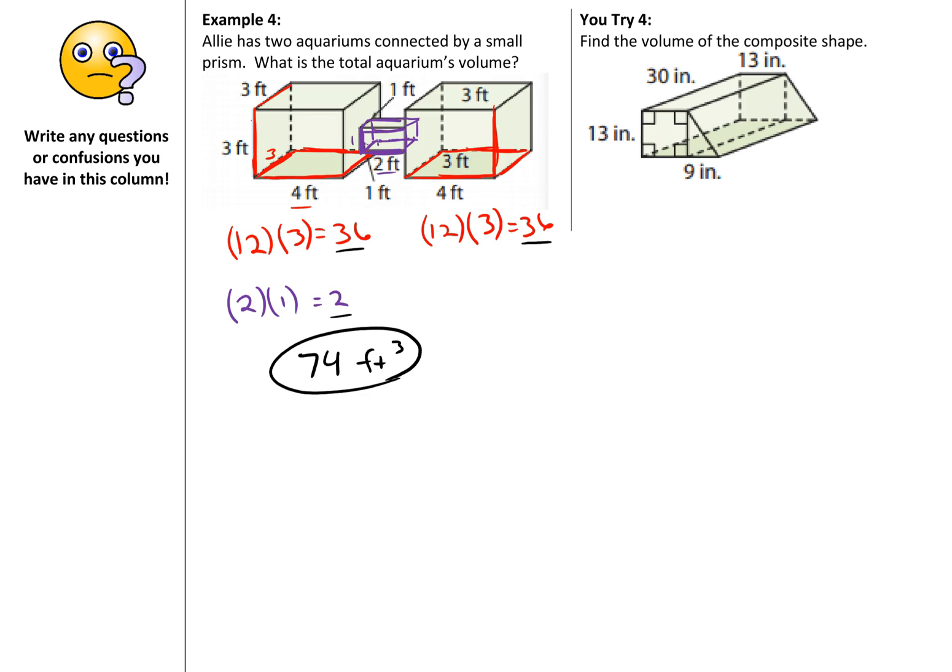I'm going to have you move on to You-try number 4. Now my challenge to you in You-try 4 is to look at this as a trapezoidal prism. It is technically a rectangular prism and a triangular prism together, but why not save some of the work here and treat this as a trapezoidal prism? Go ahead and pause and try.